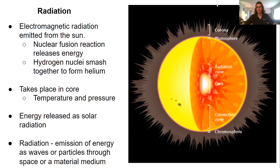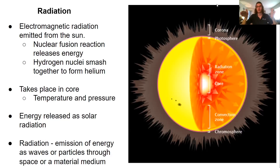When we think about electromagnetic radiation and electromagnetic energy, it falls on a broad spectrum of wavelengths. Those different wavelengths make up the different types of radiation that are emitted from the sun. Some of them are going to be things that we're much more used to on a daily basis, and some are not.